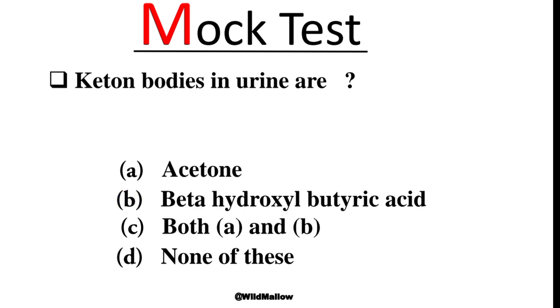Ketone bodies in urine are both Acetone and Beta-hydroxybutyric acid.